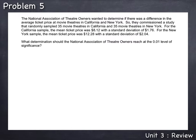For the California sample, the mean ticket price was $8.12, with a standard deviation of $1.76. For the New York sample, the mean ticket price was $12.28, with a standard deviation of $2.04. What determination should the National Association of Theater Owners reach at the .01 level of significance?